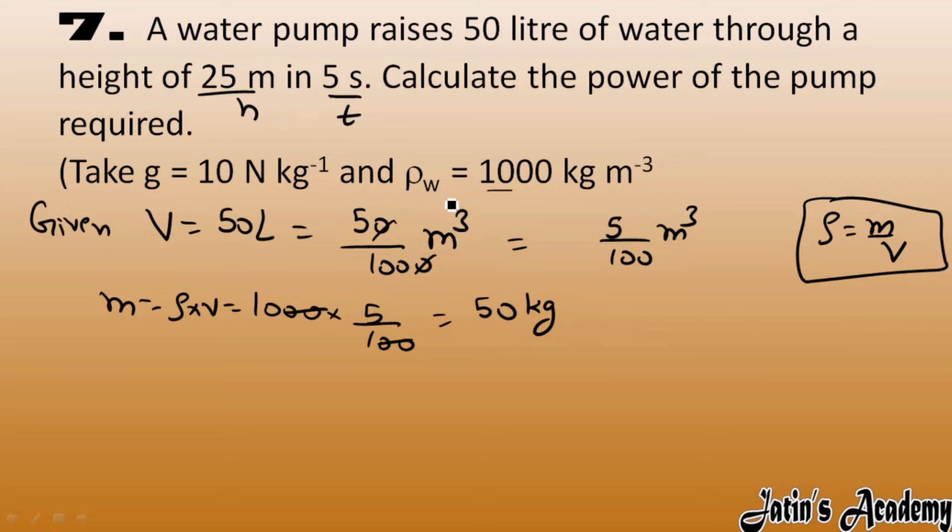Now we have to calculate the power. Power equals work done per unit time. Work done is force into displacement over time. Force in this case is force due to gravity, m into g into displacement over time. Mass value 50 kg, gravity we have 10, displacement means height 25, and time we have 5. So from here we got 2500 watts as power.